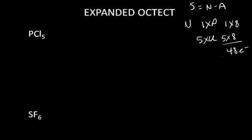48 needed electrons. For available electrons, phosphorus is in group 5, so that would be 5 valence electrons, and chlorine is in group 7, so that's 5 times 7 equals 35. That's a total of 40 available electrons.